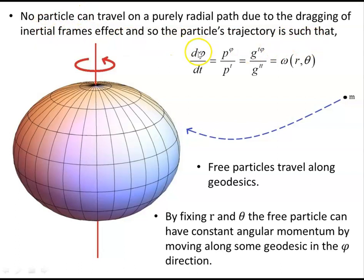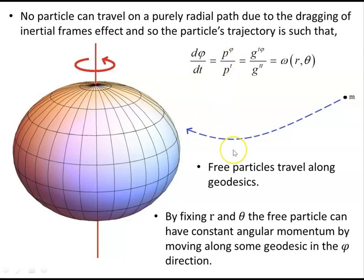Due to the dragging of inertial frames, no particle can travel on a purely radial path. The particle's angular velocity is given by g_tφ / g_tt, which equals the angular velocity as a function of r and theta. As a result, any particle of mass m must rotate with the source mass as it moves inward — it cannot rotate against it — and this twists paths out of the purely radial direction.